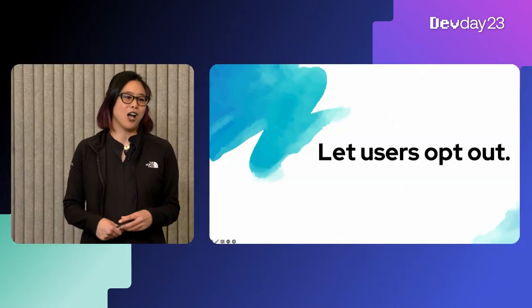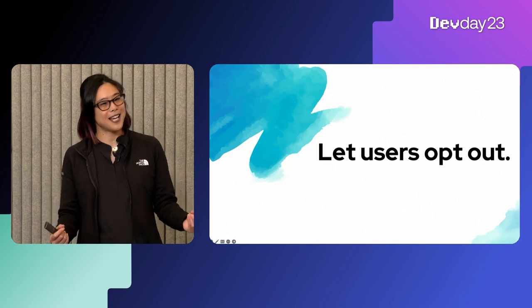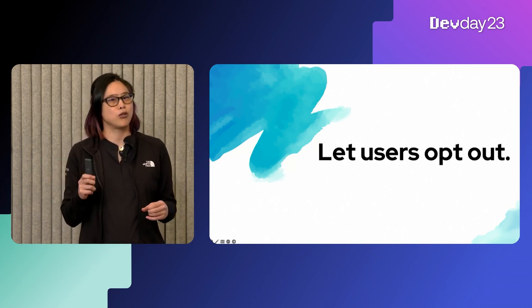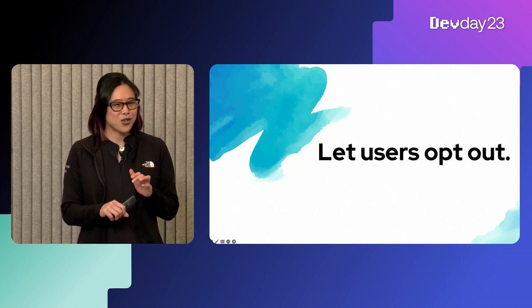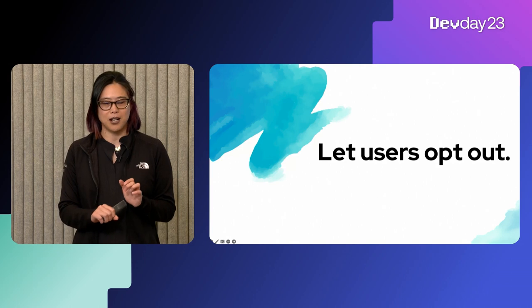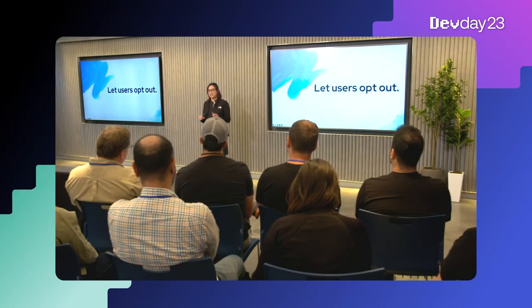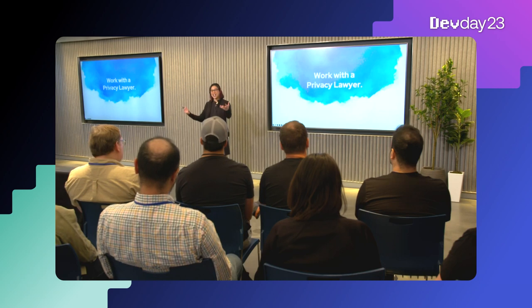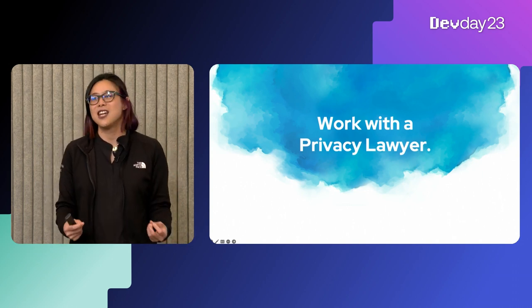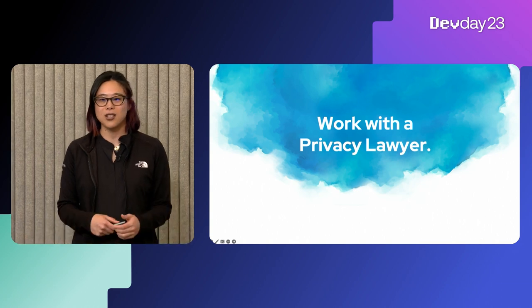Number eight: let your users opt out of third-party sharing. When they do this, don't penalize them — their services should not be affected. Also, coming in June or July in Colorado, you have to default opt users out of data sharing. In California, conversely, you just have to let people know you're going to be doing data sharing. Privacy laws are changing fast, so work with a privacy lawyer. Also, hire or work with privacy engineers because those are the folks who can help you build the technical implementations to automate some of these privacy controls.